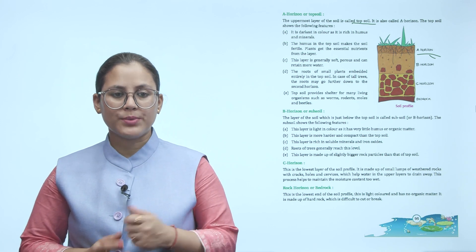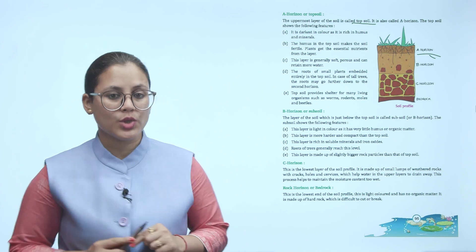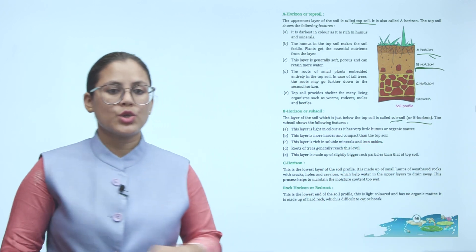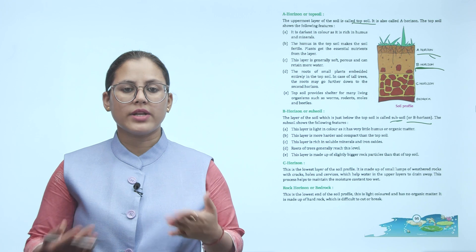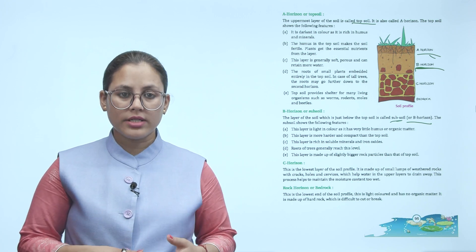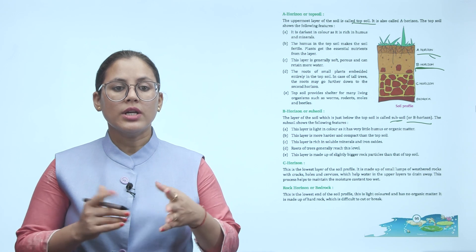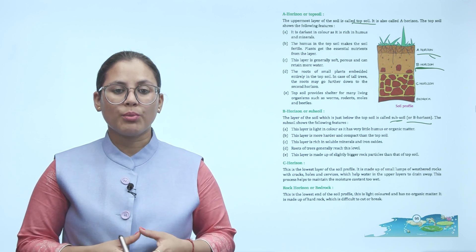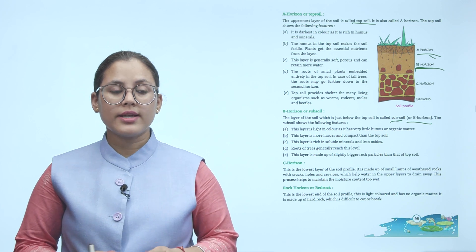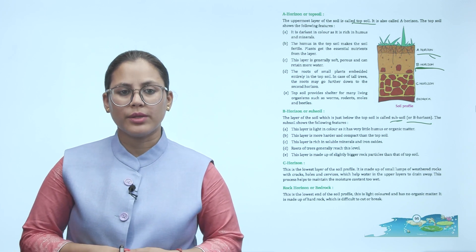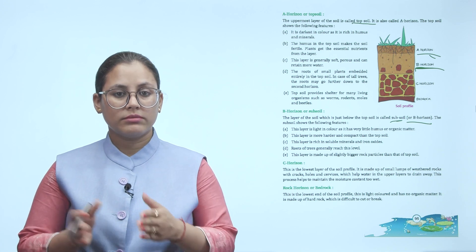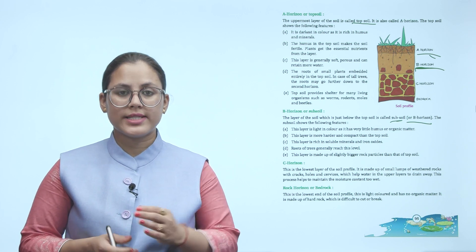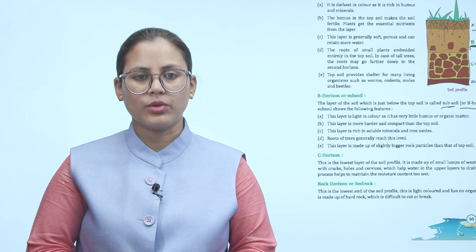B horizon or subsoil: The layer just below the topsoil is called subsoil or B horizon. This layer is light in color as it has very little humus or organic matter. This layer is harder and more compact than the topsoil. This layer is rich in soluble minerals and iron oxide. Roots of trees generally reach this level. This layer is made up of slightly bigger rock particles than that of topsoil.